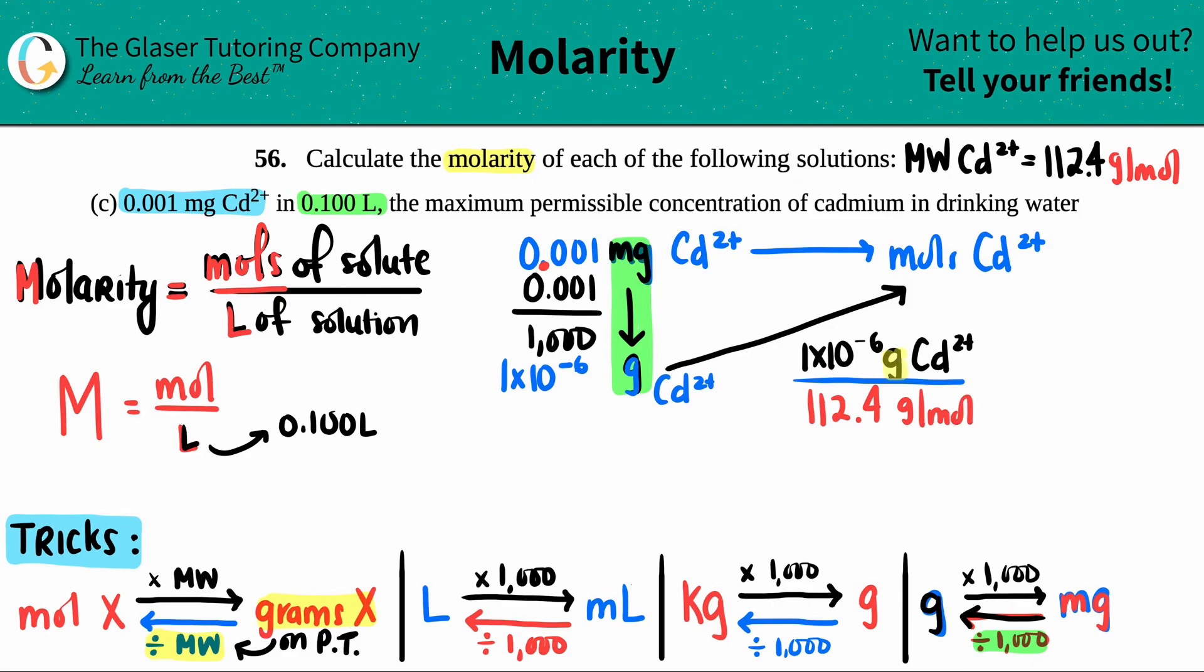So I'm going to take the one times 10 to the negative six and that's the grams of Cd2 plus. I'm going to divide by the molecular weight, which is 112.4 and that's in grams per mole. And you see how on the top and the bottom is grams? Yeah, they cancel. And that's why you're only left with moles. So that's why this little trick works if we don't want to do a dimensional analysis. So one times 10 to the negative six divided by 112.4. Technically, I still need one sig fig because the information that they gave us at the start was only one sig fig. So I'm only going to say one sig fig. This is nine times 10 to the negative ninth, and that's moles of Cd2 plus.